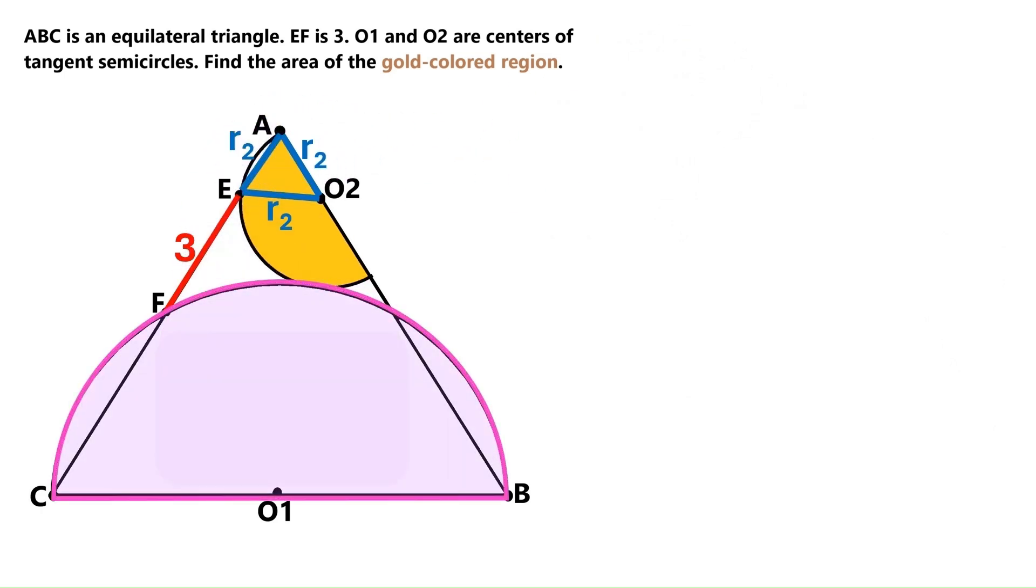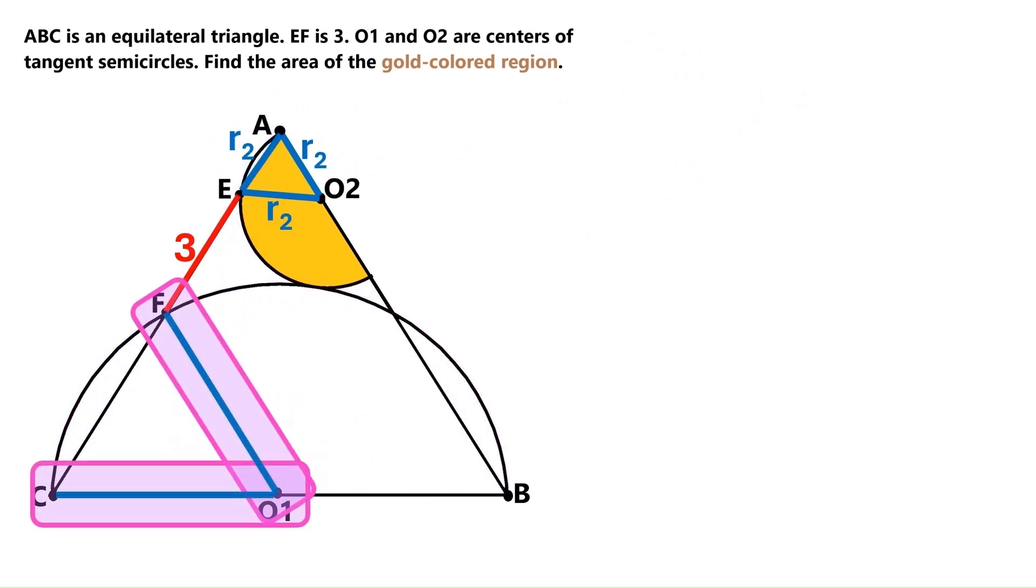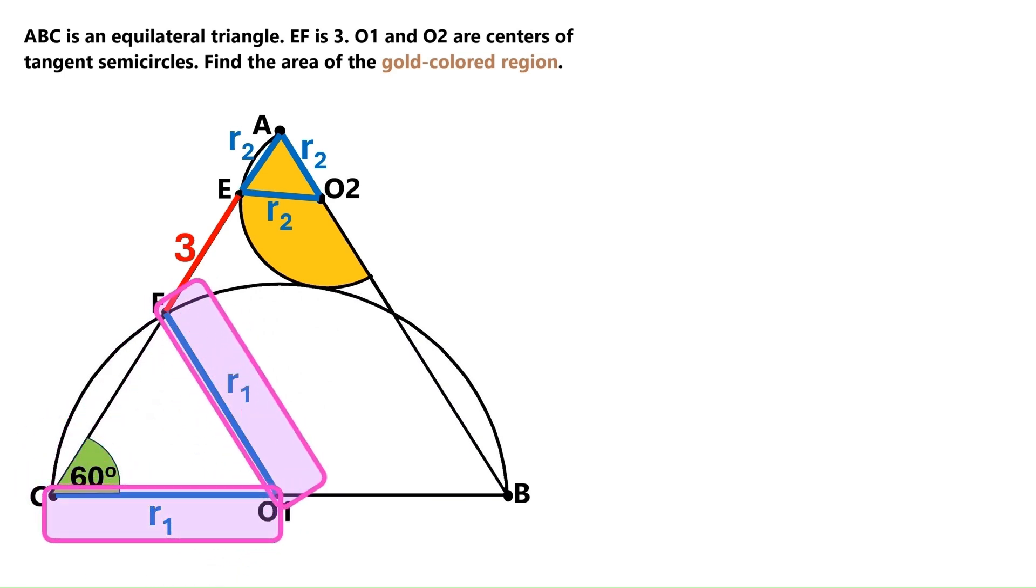Now, we can do the same thing for this semicircle too. We draw two radii here, and we call them R1. This angle is 60 degrees. These two sides are identical, so this angle must also be 60 degrees.